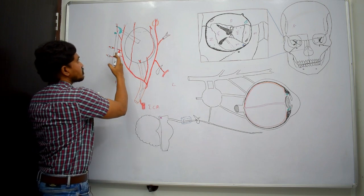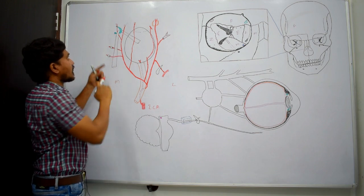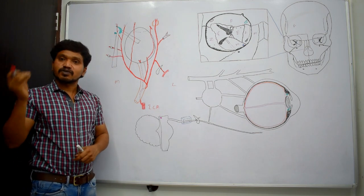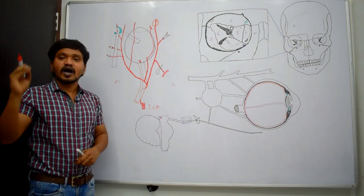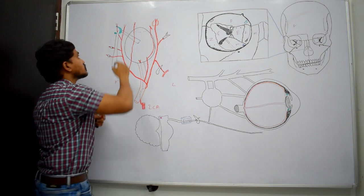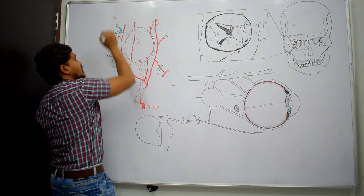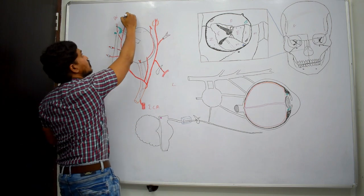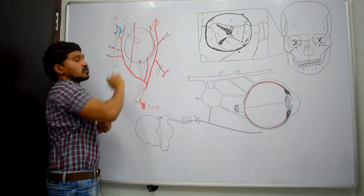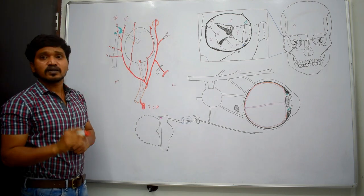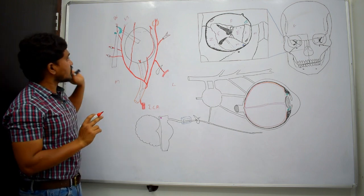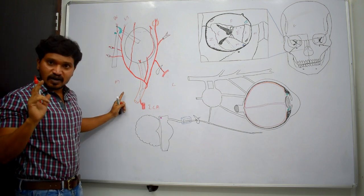Then it runs along the medial wall of the orbit and at the medial part of the eye, it terminates after dividing into two terminal branches: the dorsal nasal branch and the supratrochlear. This is the course of the ophthalmic artery.